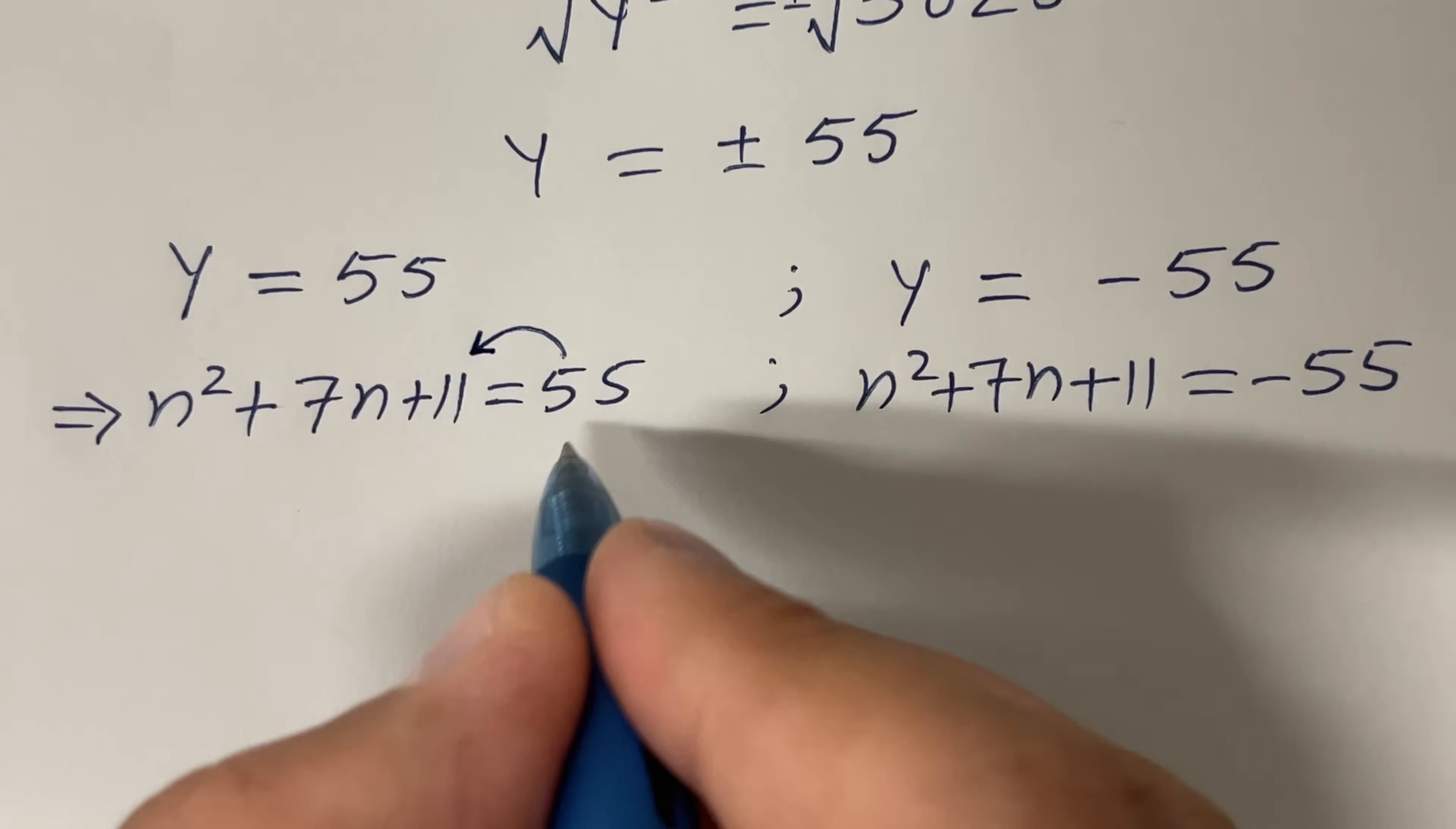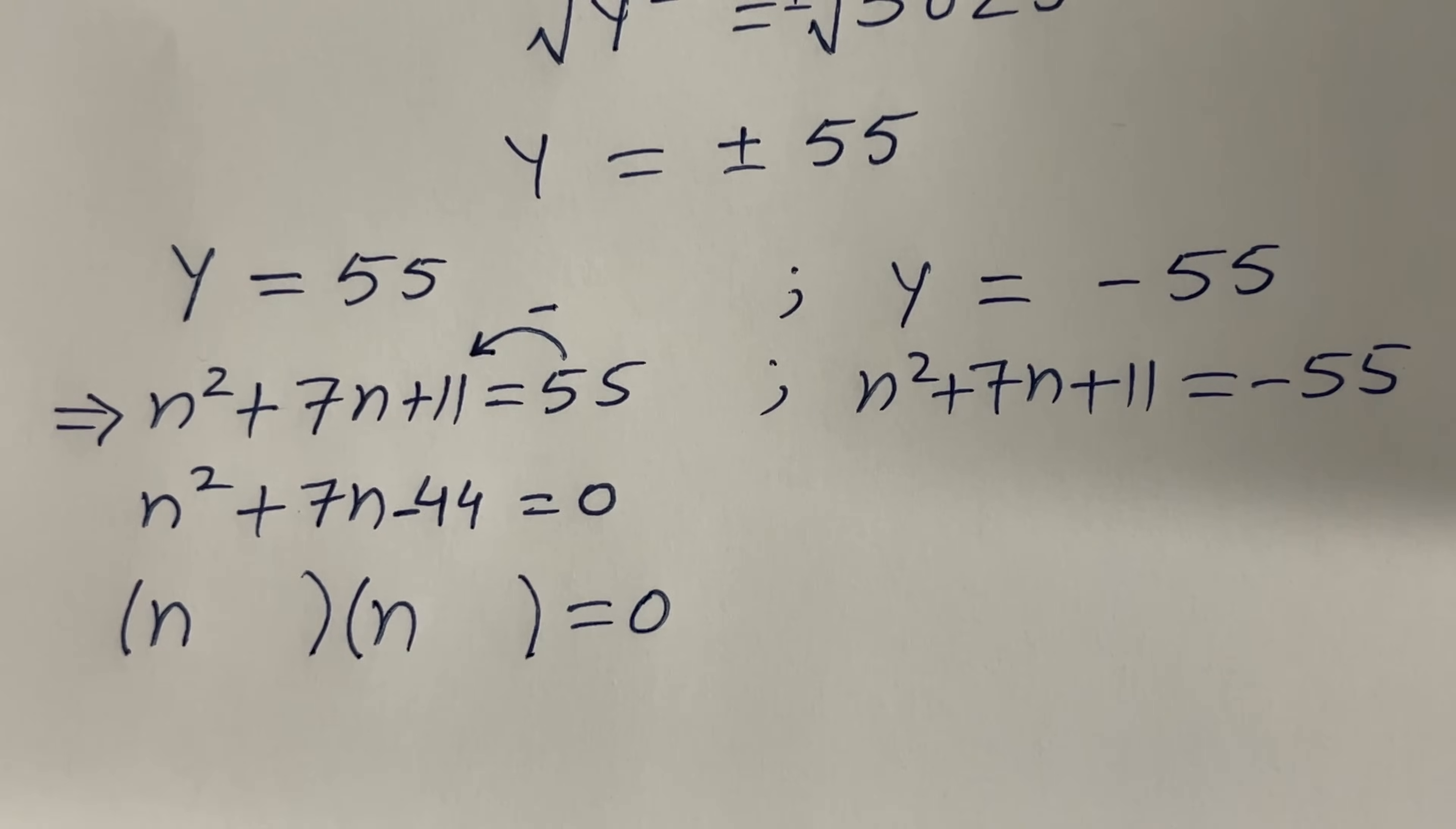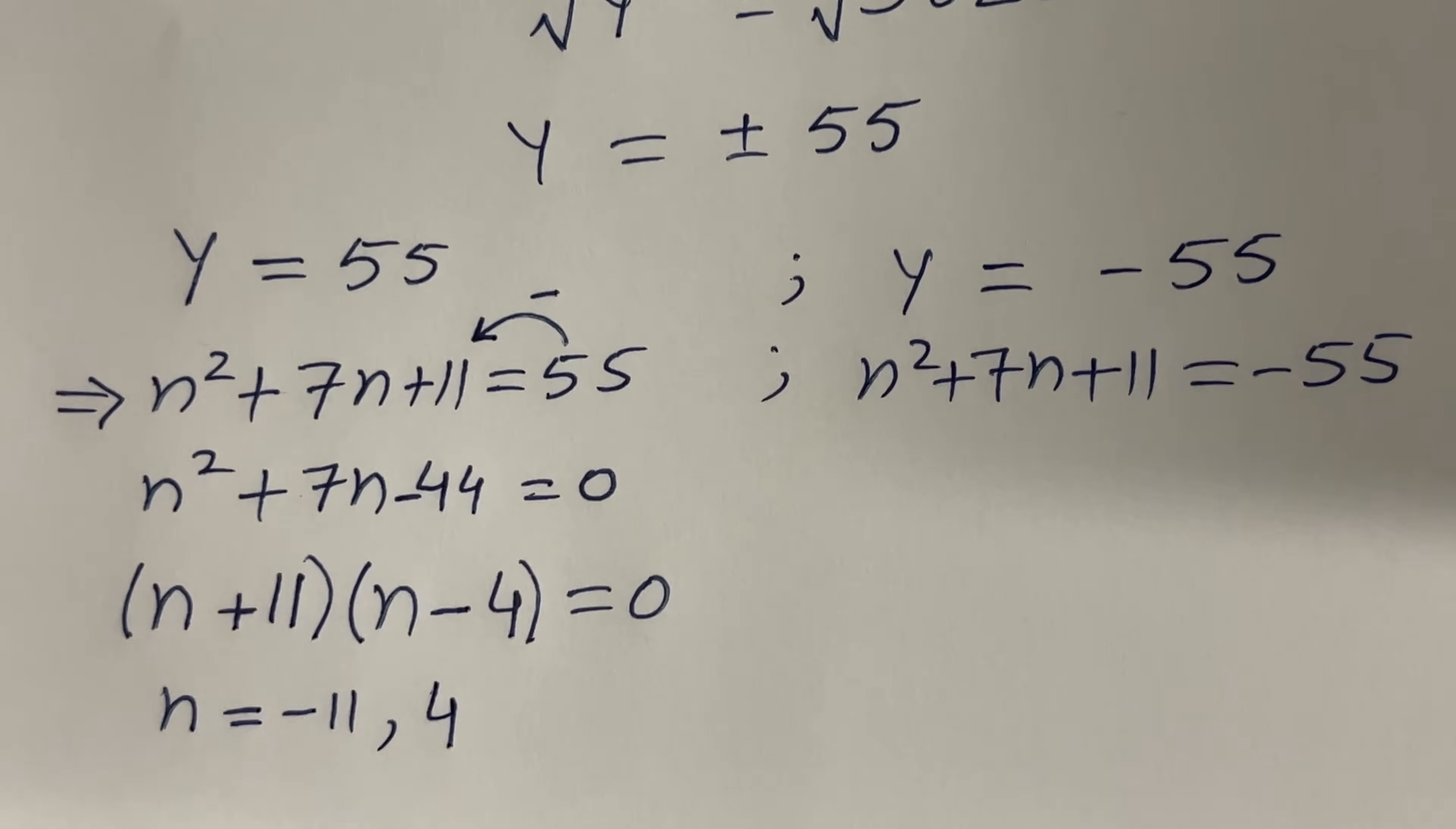Let's move this guy to the left-hand side. Then it will become negative. And we will have n² + 7n, 11 minus 55 will give us -44 = 0. And let's solve this quadratic equation. We can factor this equation. You have to multiply two numbers whose product is -44 and sum is 7. The numbers are 11 and -4. 11 times -4 is -44. And since 7 is positive, 11 will be positive and 4 will be negative. Since the product is 0, therefore you get n = -11 and n = 4. These are the two answers.